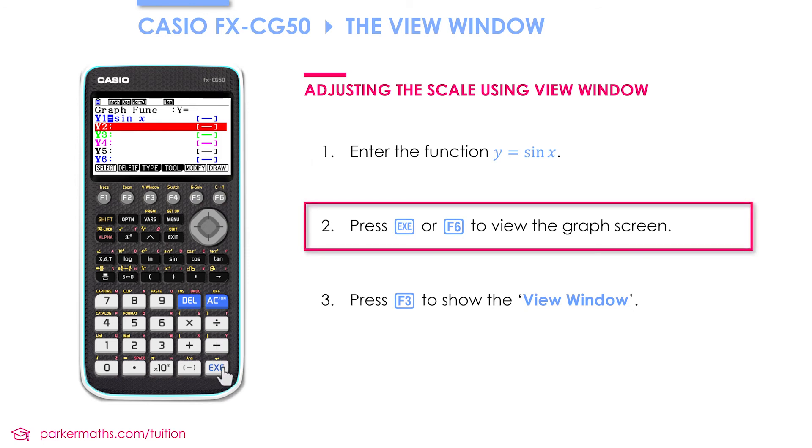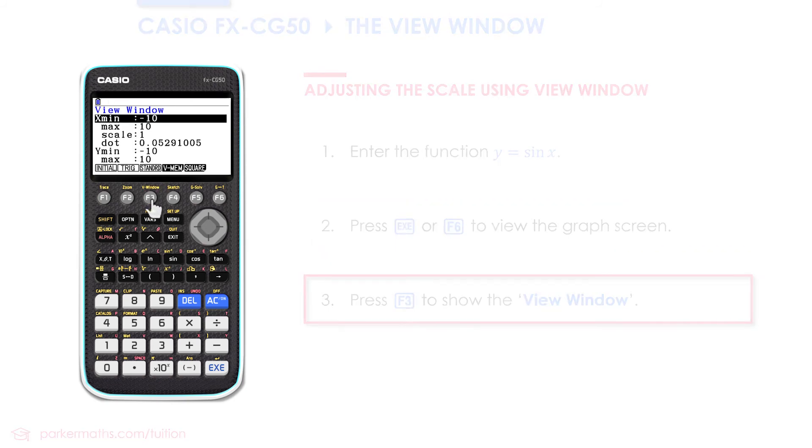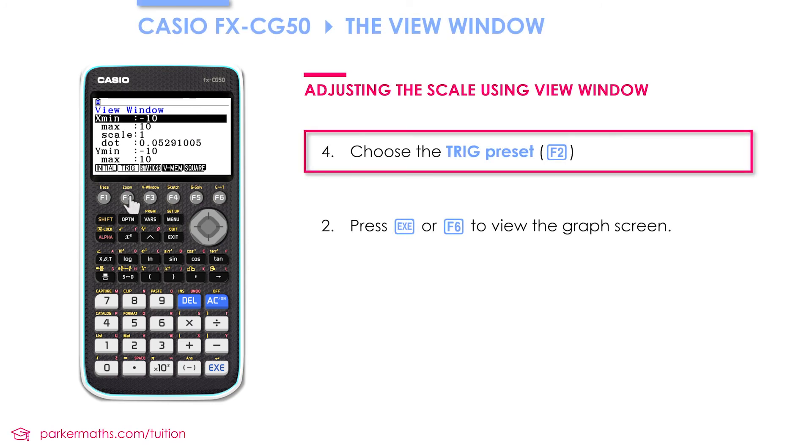If I plot this graph of y = sin x now, we don't get a very good scale for it. It almost looks like it's a horizontal line. That's because if we want to plot trigonometric graphs in degrees, we need a much larger range of values on the x-axis, and it would also be sensible to have a much smaller range of values on the y-axis. So we'll go into view window and a quick way of doing that is to go to the trig preset.